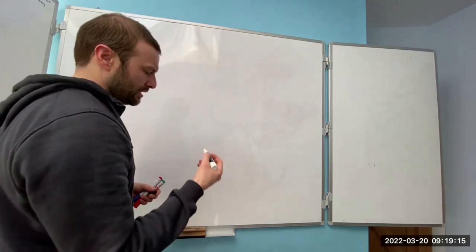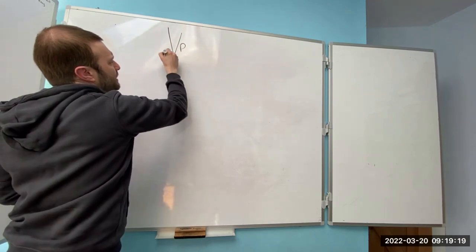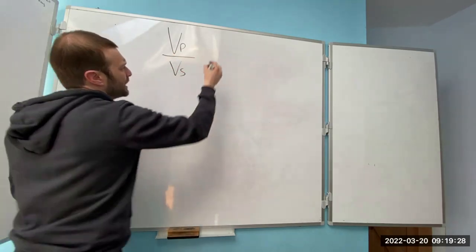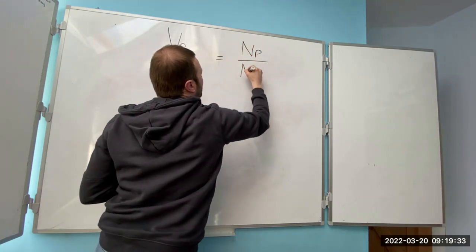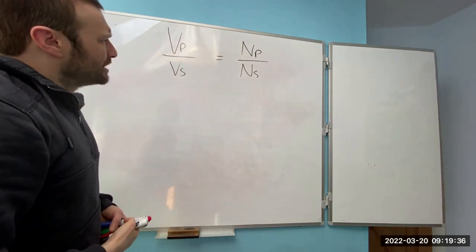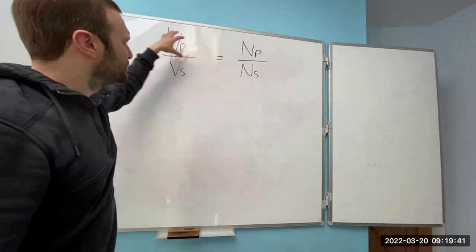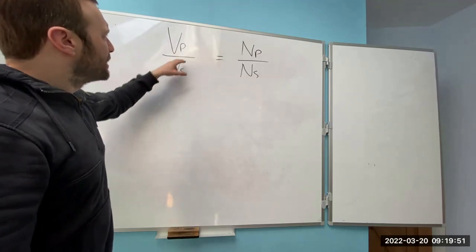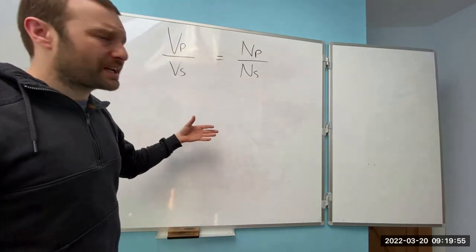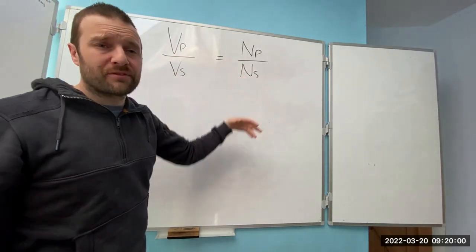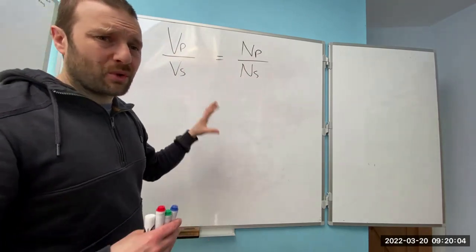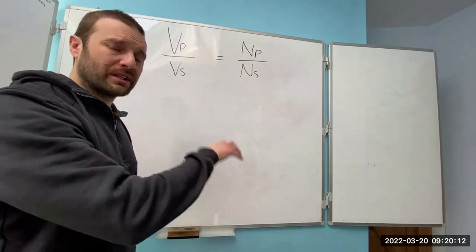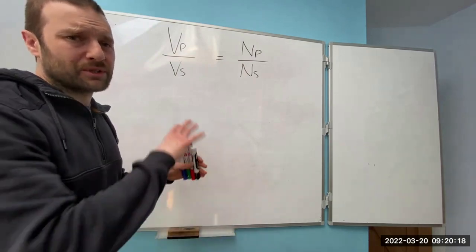We're going to start with Vp divided by Vs equals Np over Ns. When we're transposing, don't get too hung up on what these represent to start with. Vp is voltage on the primary, Vs is voltage on the secondary, Np is number of turns on the primary, and Ns is number of turns on the secondary. But none of that really matters because all you're practising is transposition. When you've finished moving the formula around and found what you want, only then do you need to worry about putting the numbers in.